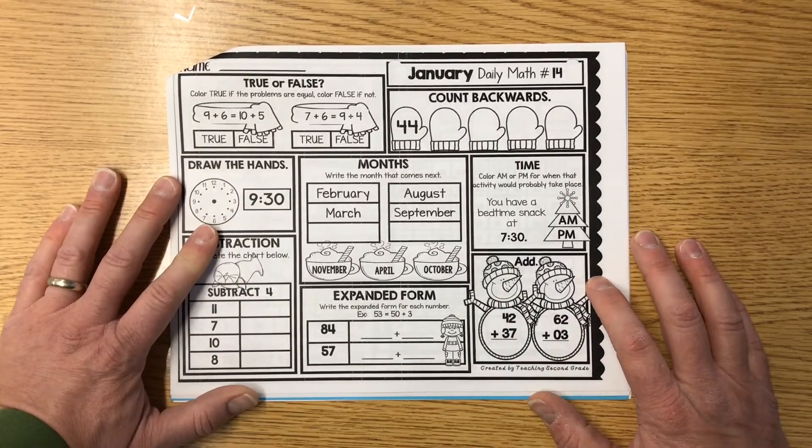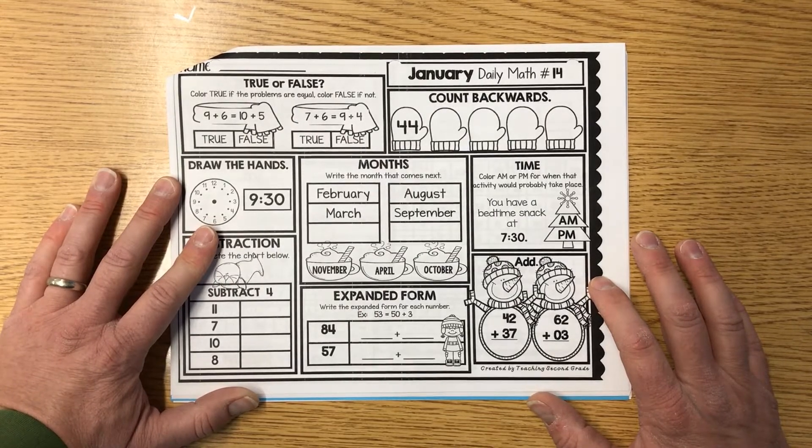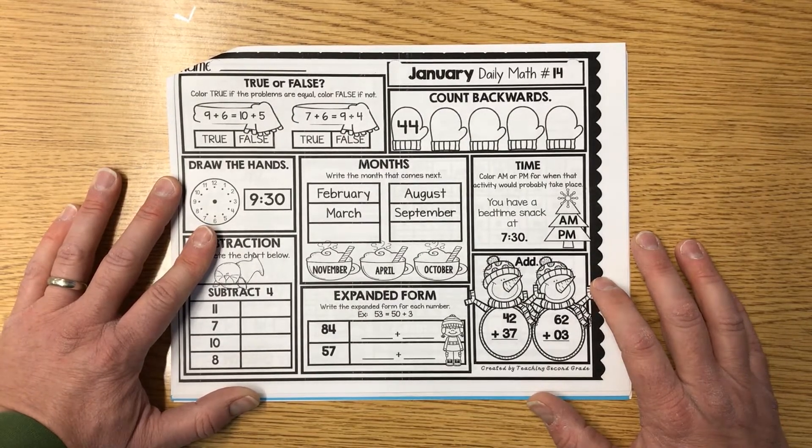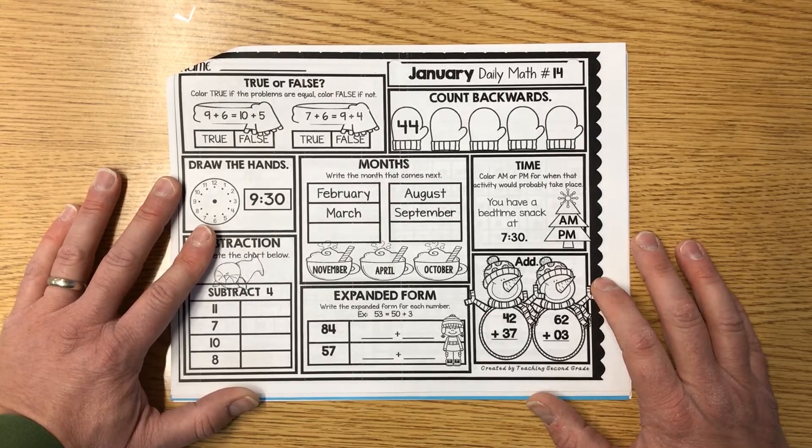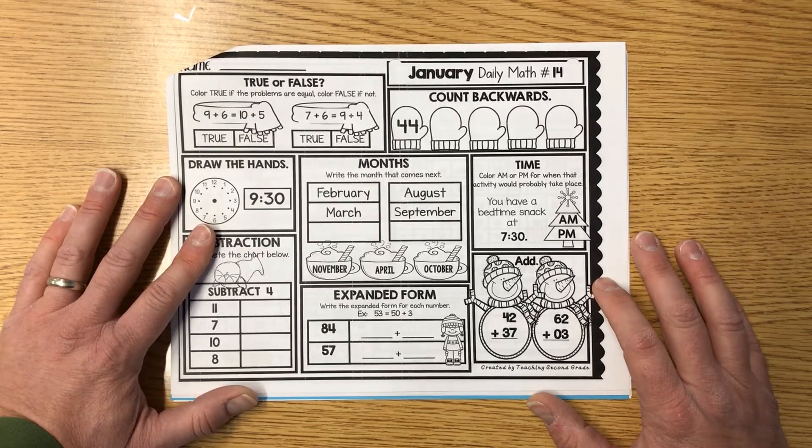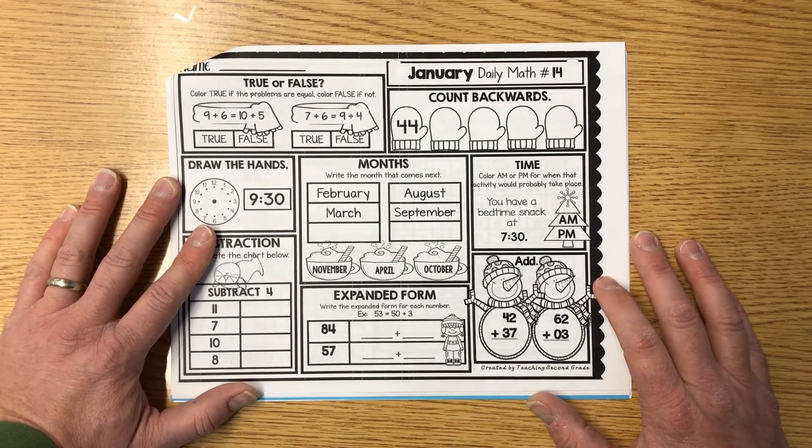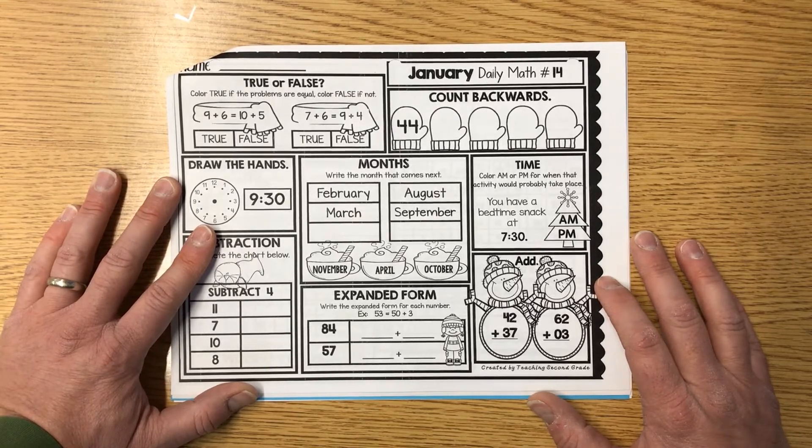Well, guys, that is your independent learning today. I'm glad you guys were listening. Hope you have a wonderful day. Make sure you use Dreambox for 30 minutes, Razz Kids for 30 minutes, and read for 30 minutes from a good, fit book. All right, guys, have a wonderful learning day. We'll see you next week. Bye-bye.